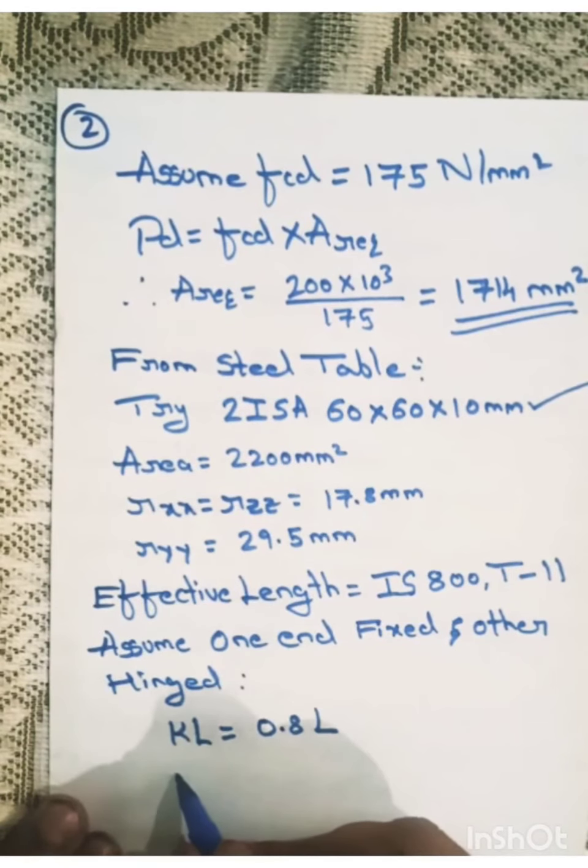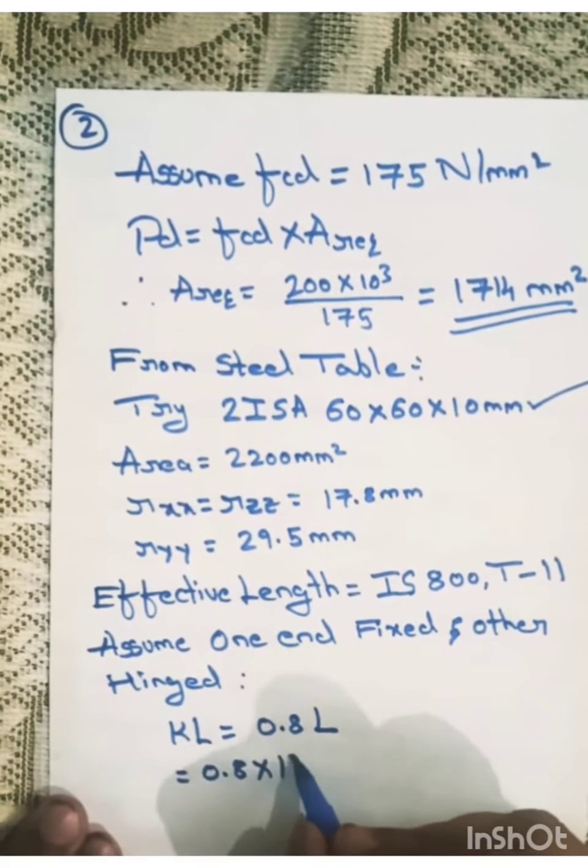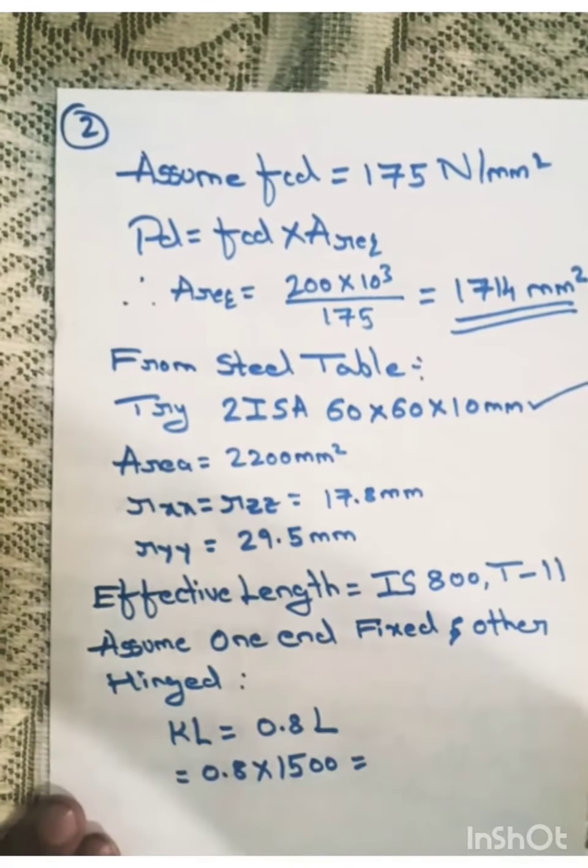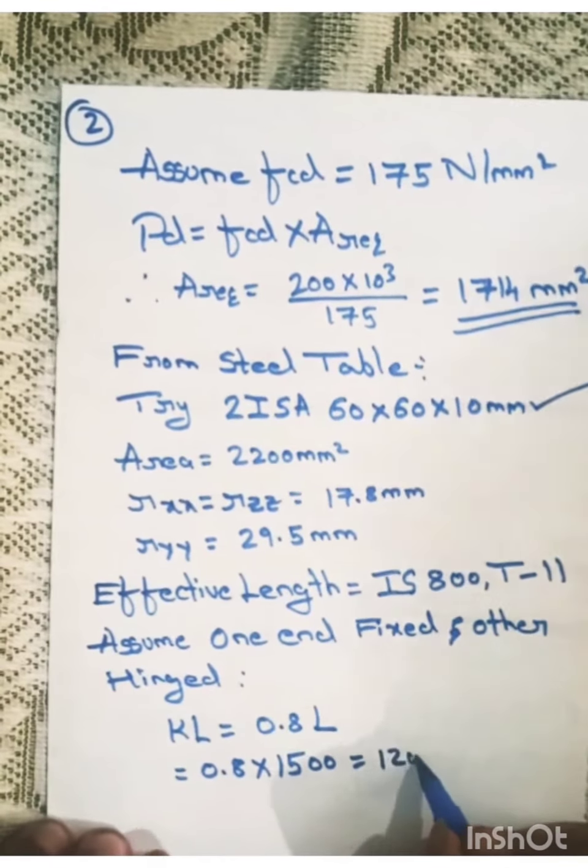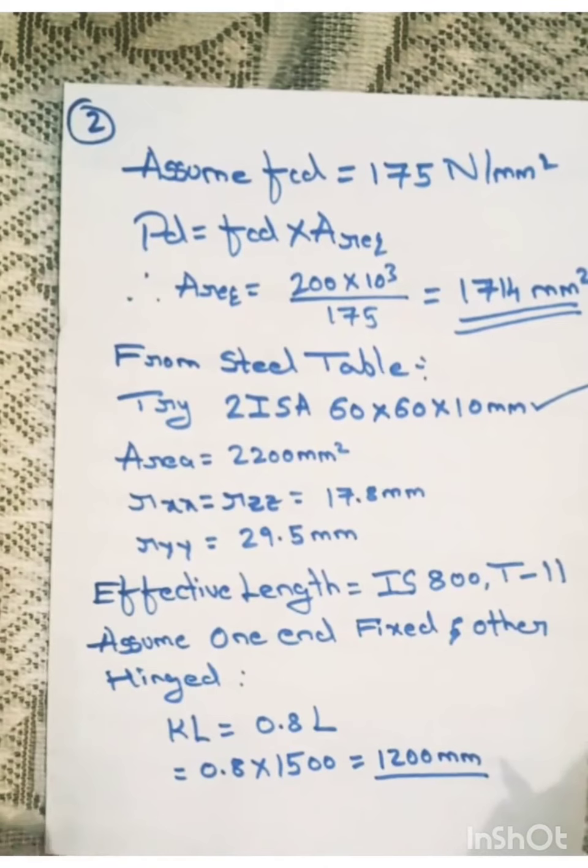So the value of K will be 0.8 times L. In our problem, it is 0.8 into length is 1.5 meter, 1500 mm, which comes around 1200 mm. So this is the effective length for the member of length 1.5 meters.